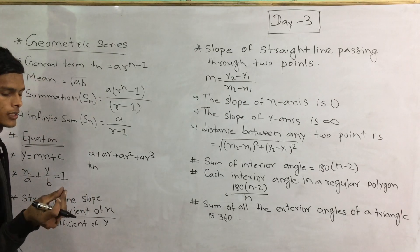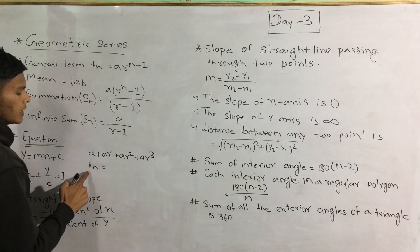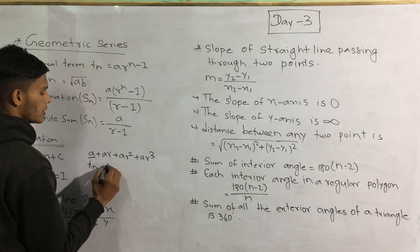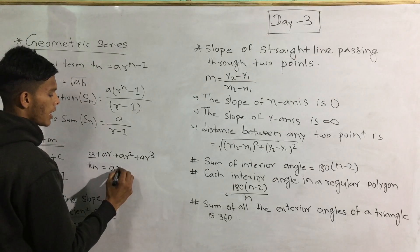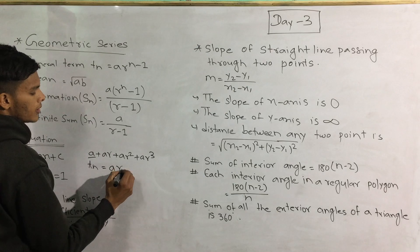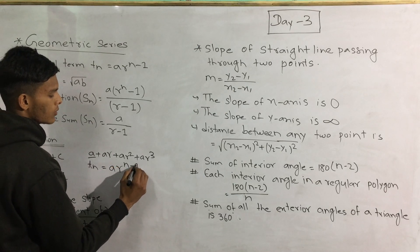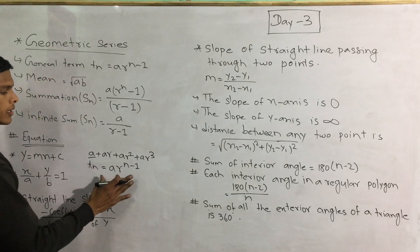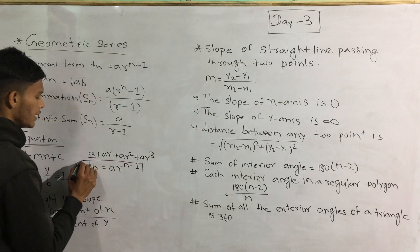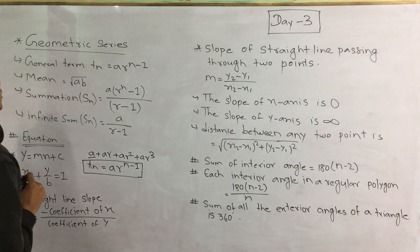What is the TN term of geometrical series? The TN term is A·R^(n-1). So the TN term of a geometric series is A·R to the power n minus 1.